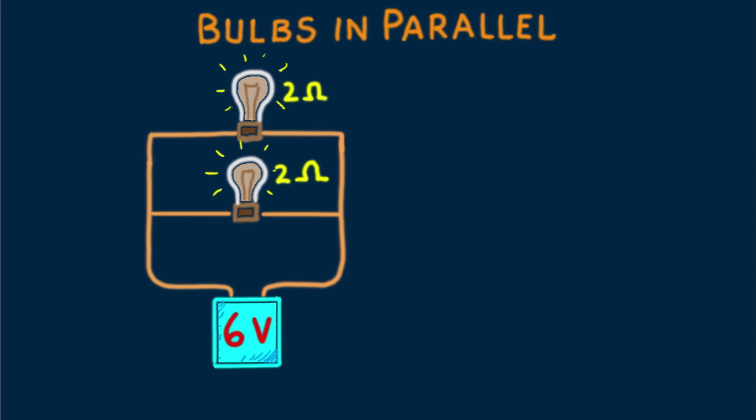This further means that if one bulb blows out, the other will remain lit. A nice feature of parallel circuits.